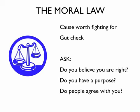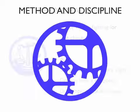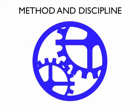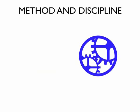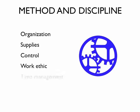Method and discipline is the last of the five factors and probably the most universal. Another title for it might be organization. For Sun Tzu, it meant who could supply troops the best and control expenses. For you, it may mean work ethic and time management.